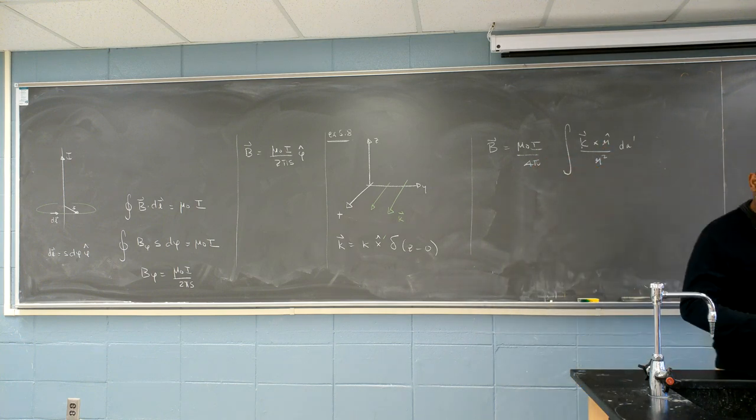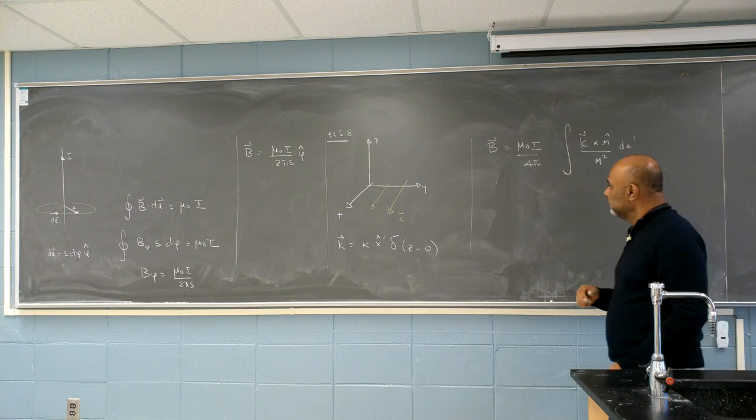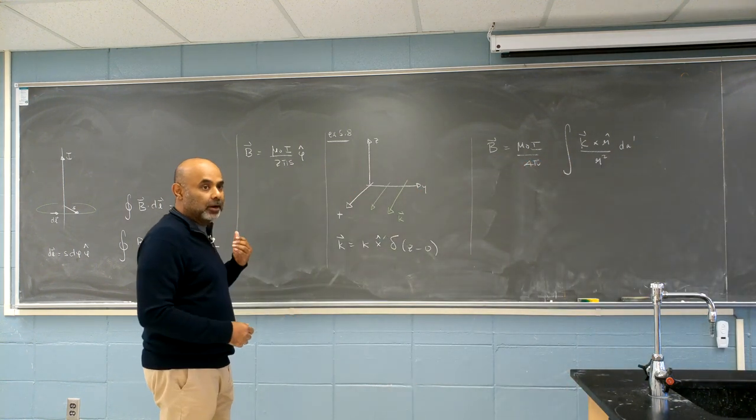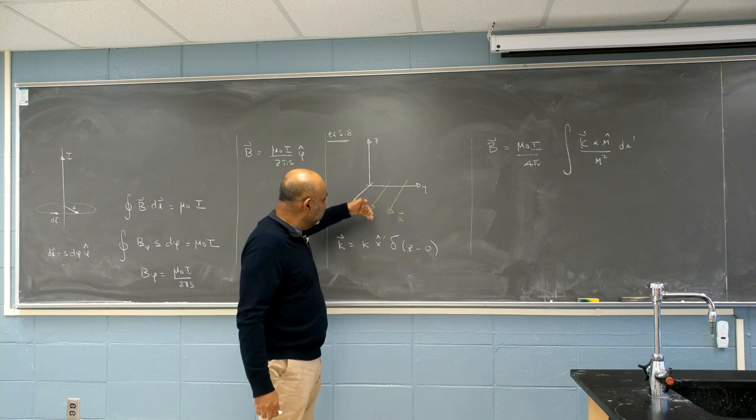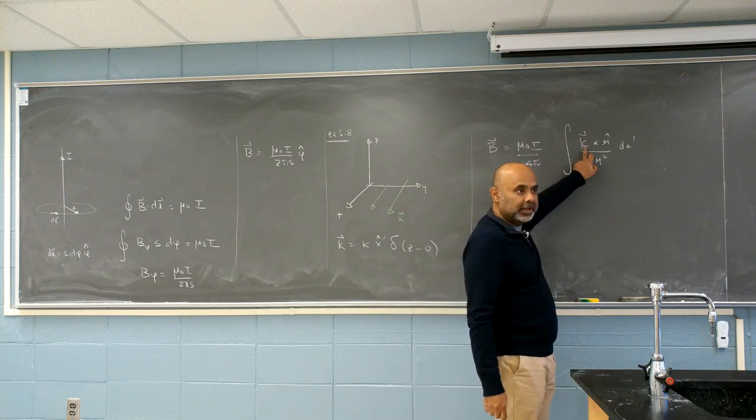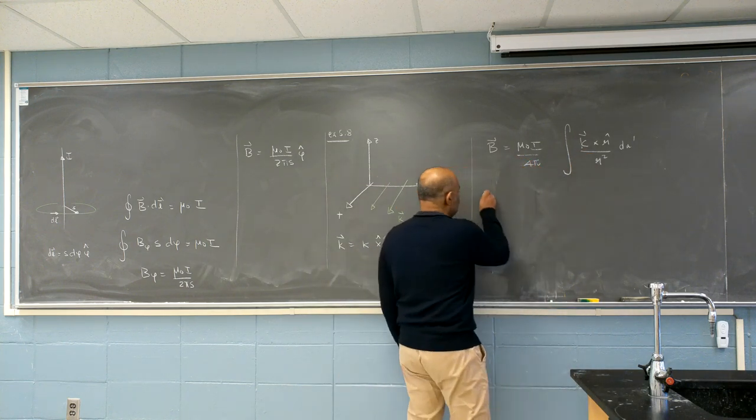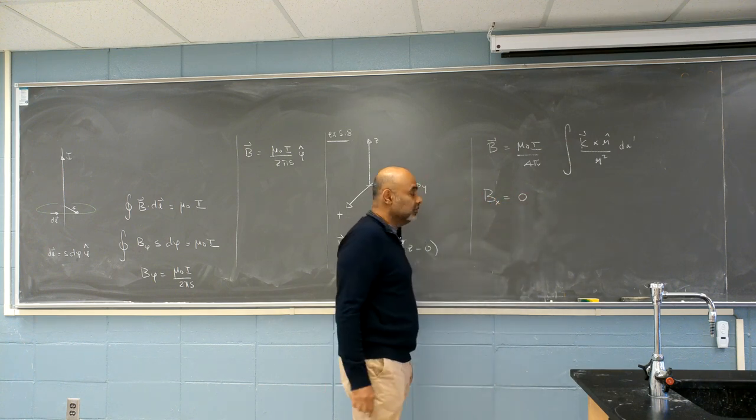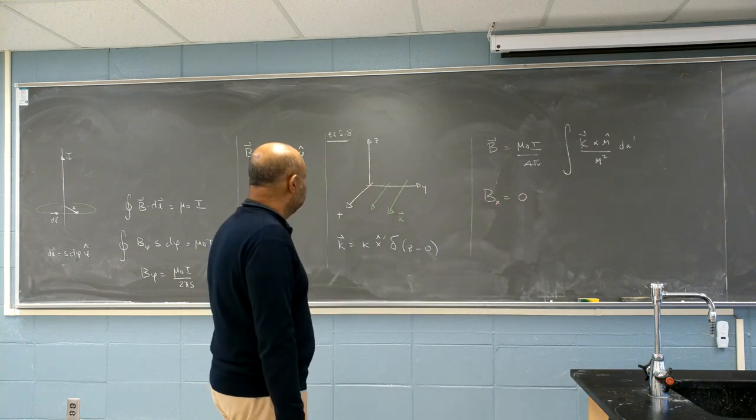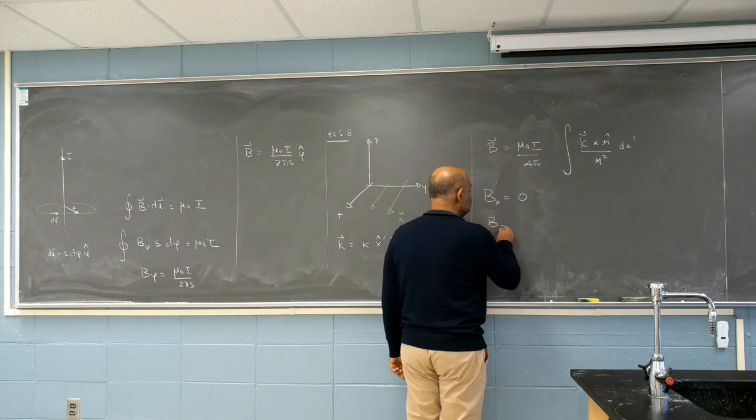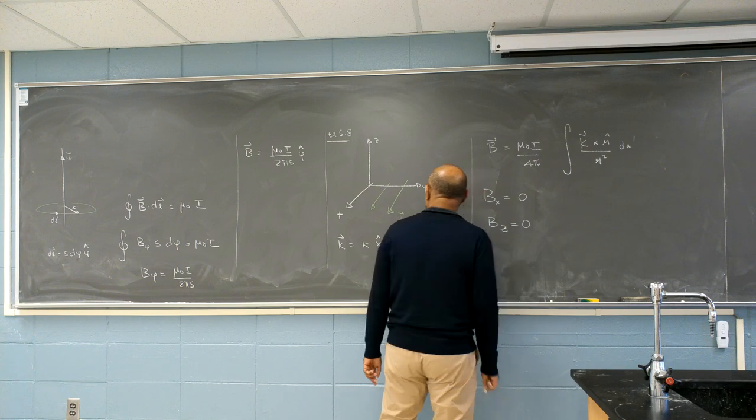Now let's look at which way the current, magnetic field can point and cannot point. Can it point in the x direction? No. It's perpendicular to the x direction. So we know that Bx is equal to zero. And now I'm going to write Bz is equal to zero. And you're going to tell me why.